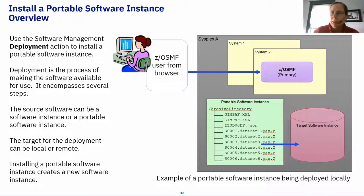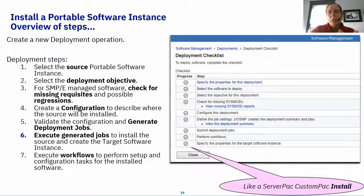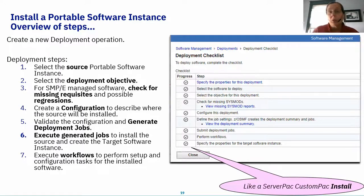This is highly customizable. You'll be able to tell us exactly what the dataset names are, what the volume names are, how they're SMS-managed, how they're catalogued, whether you want to use a new user catalog — all of those options. You provide this information in the deployment checklist. The deployment checklist guides you through these steps so you can't make an error, just like you couldn't jump around in the ServerPac ISPF dialog.